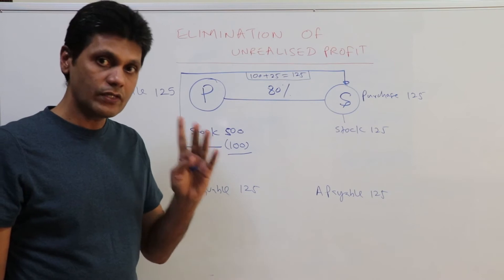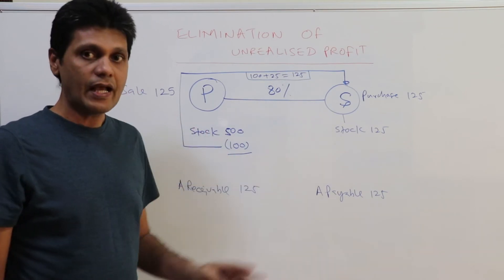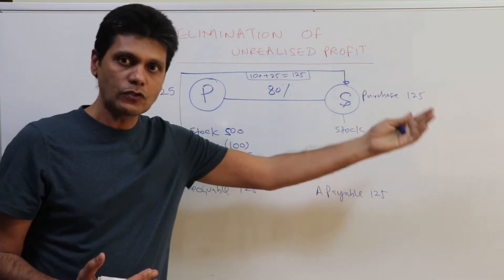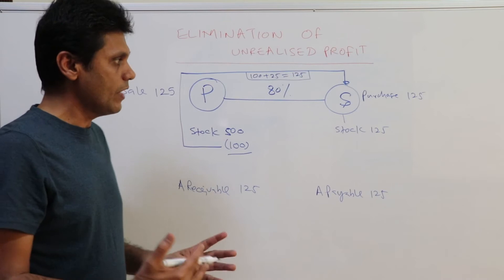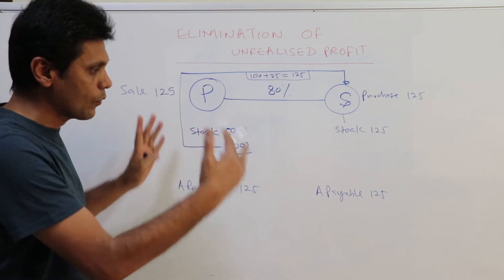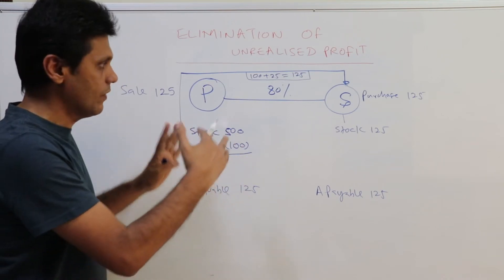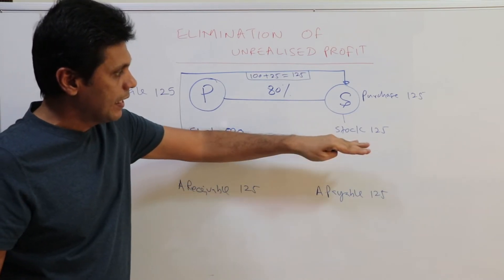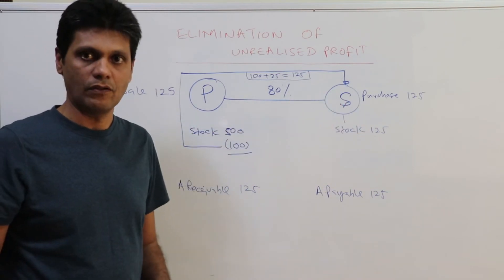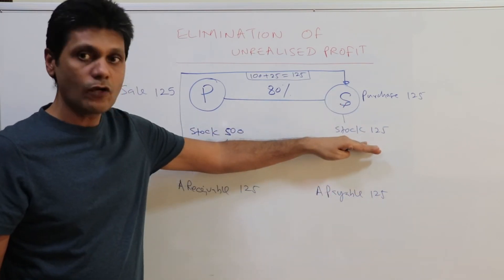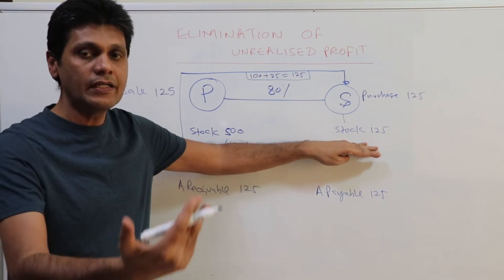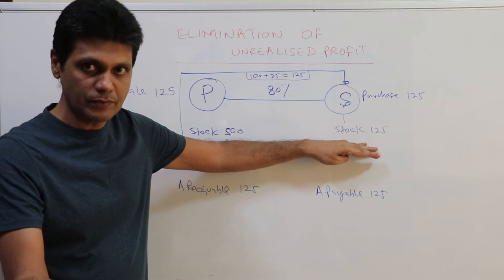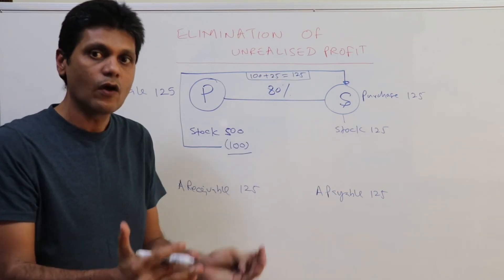By the end of the accounting period, S company has not sold these goods to outside customers. Therefore, as far as the group is concerned, the stock is lying in the books of S company. These goods have not been sold to outside customers, so they are lying within the group.